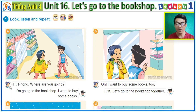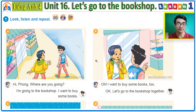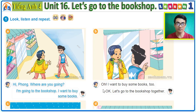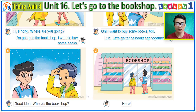Fun and My are going to the bookshop. Now you look and listen: 'Hi Fun, where are you going?' 'I'm going to the bookshop. I want to buy some books.' 'Oh, I want to buy some books too.' 'Okay, let's go to the bookshop together.' 'Good idea. Where's the bookshop?' 'Here.' Now listen and repeat.